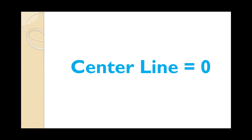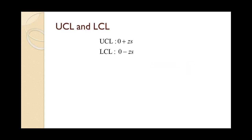Since without bias the average error of a forecast would be zero, the centerline of this control chart for forecast error is always zero. The formulas for the upper control limit and lower control limit are shown on the slide. In almost all cases, control charts are produced at z equal 3.